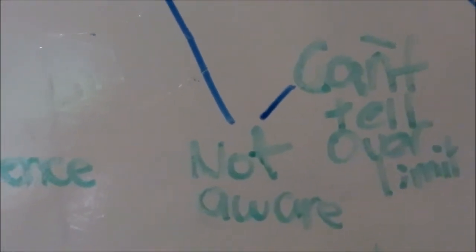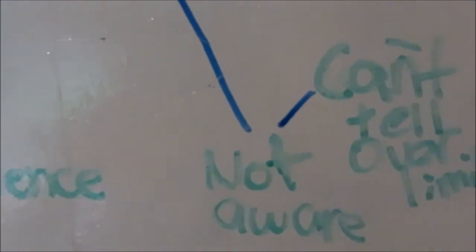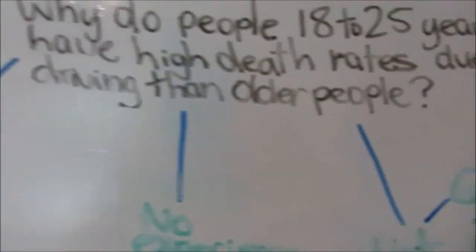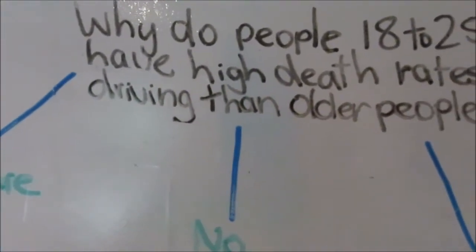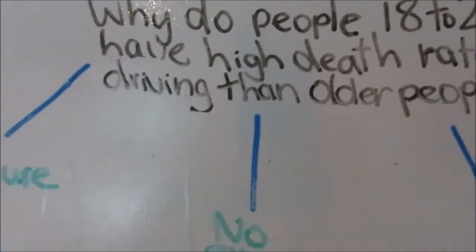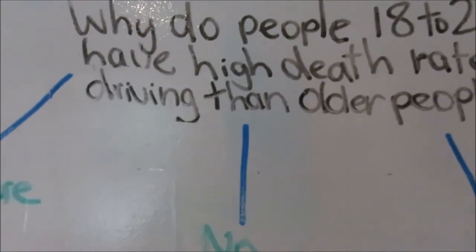They are not aware. They can't tell that they are over the alcohol limit. And they are not educated on safe choices. These are all the reasons why people 18 to 25 years old have higher death rates due to drink driving.